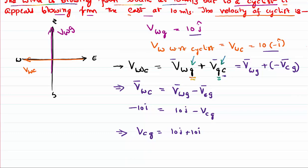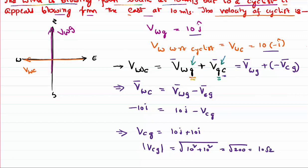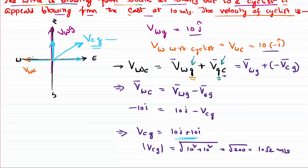If you want the magnitude of this velocity, take the square root of the sum of squares of its components. For direction, note that 10i cap points east and 10j cap points north, so the resultant vector points diagonally between east and north. This means the cyclist is moving in that northeast direction, and for someone moving this way, the wind blowing northward appears to blow from the east — consistent with the problem.